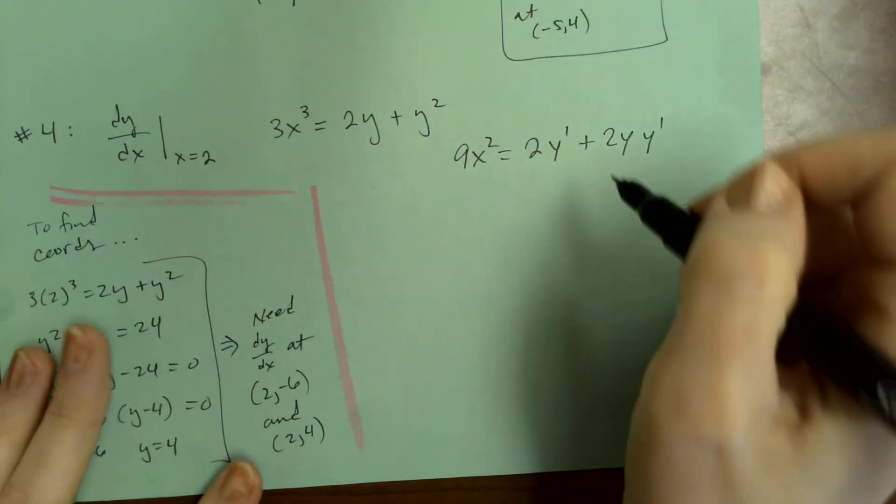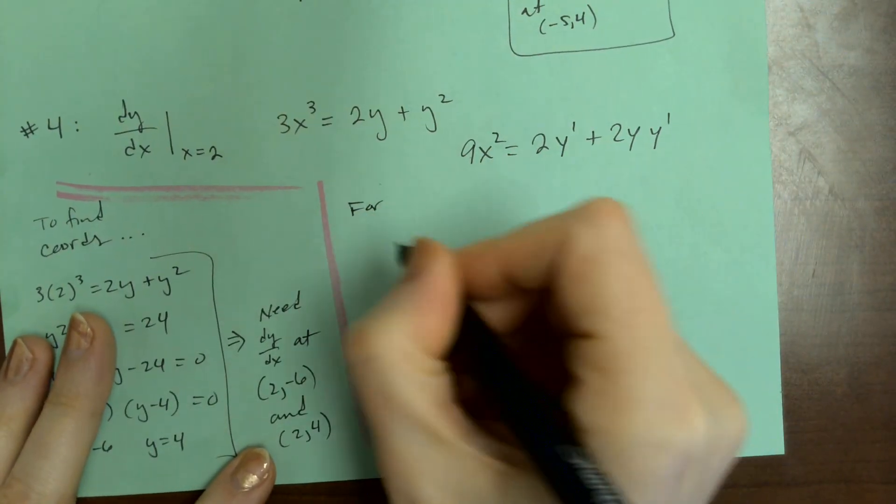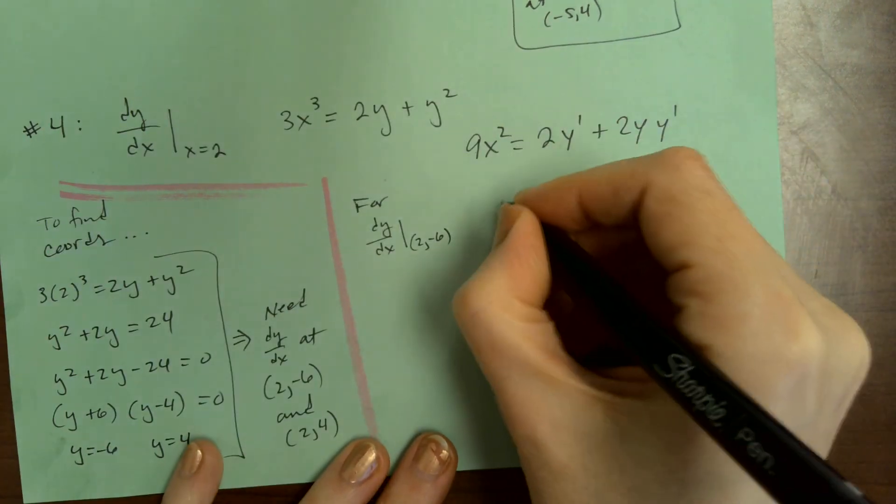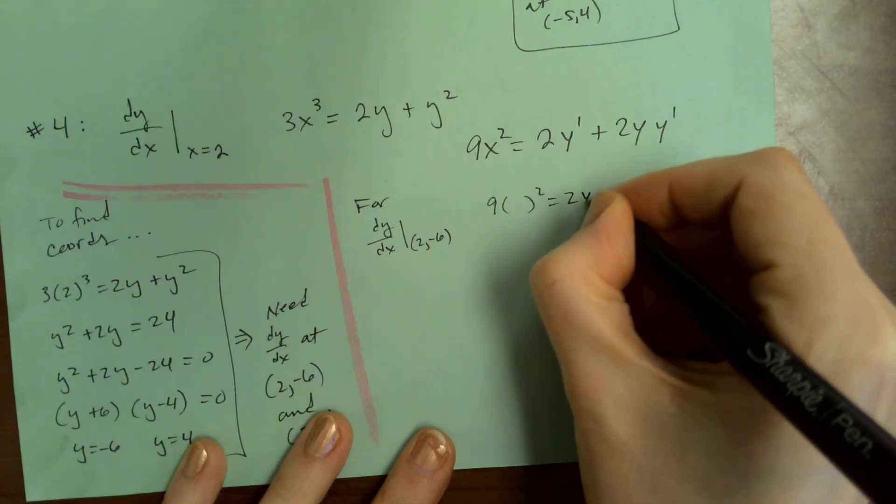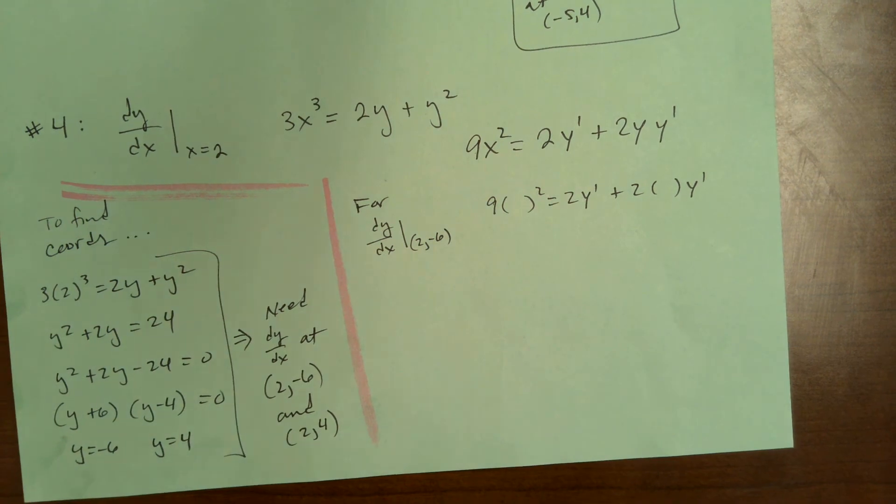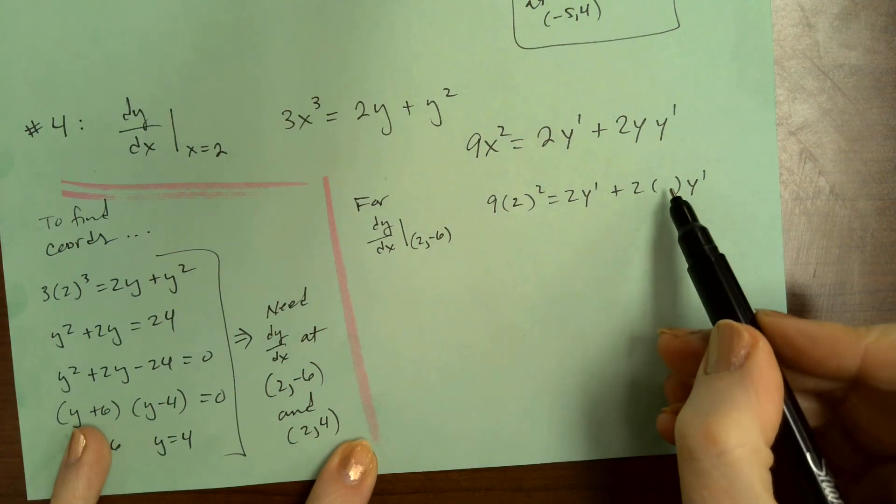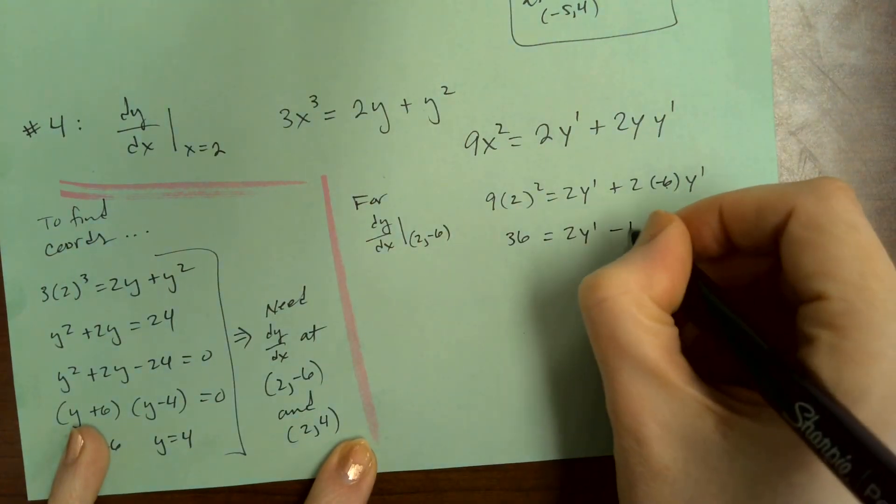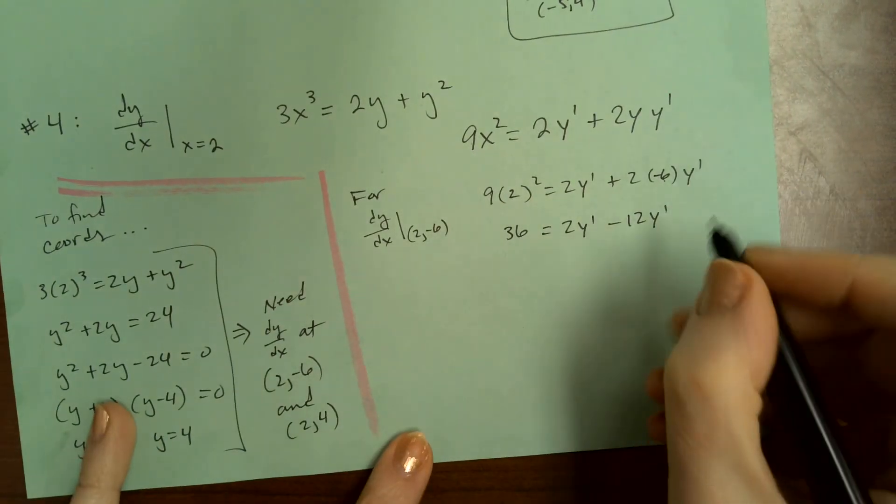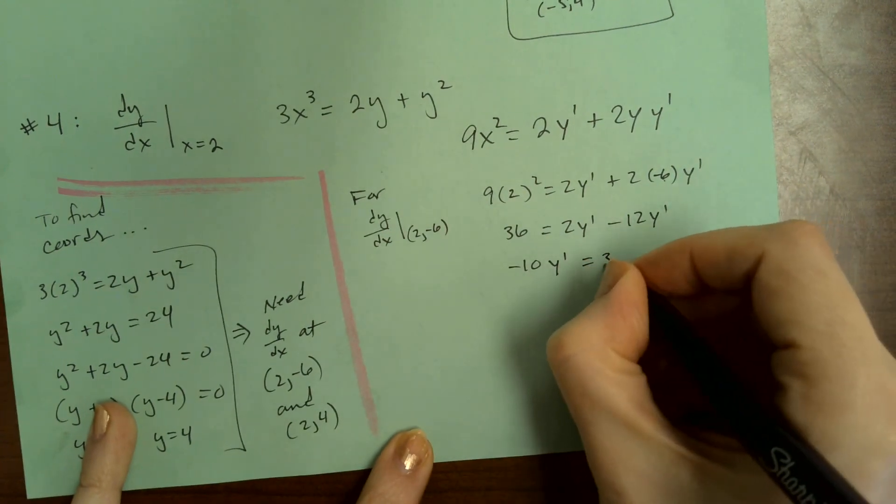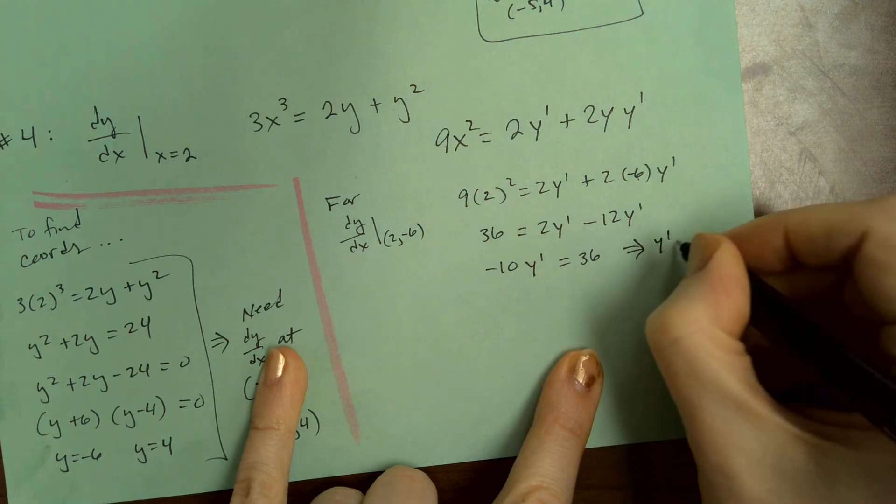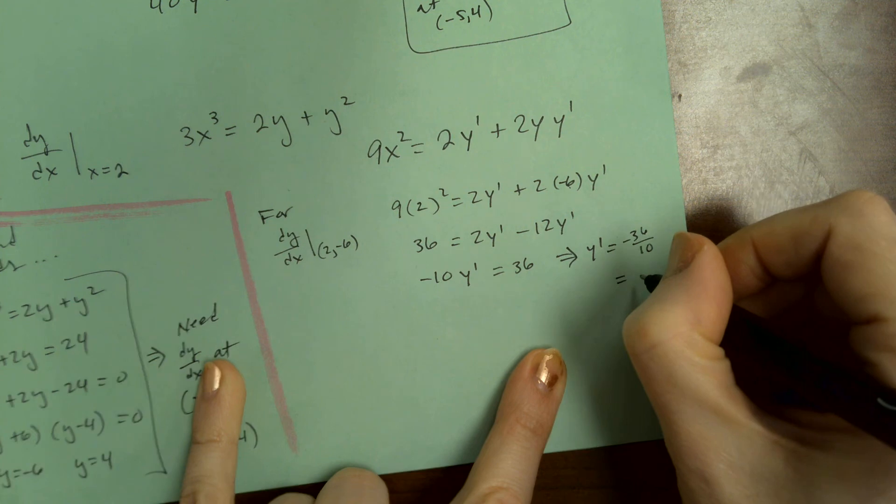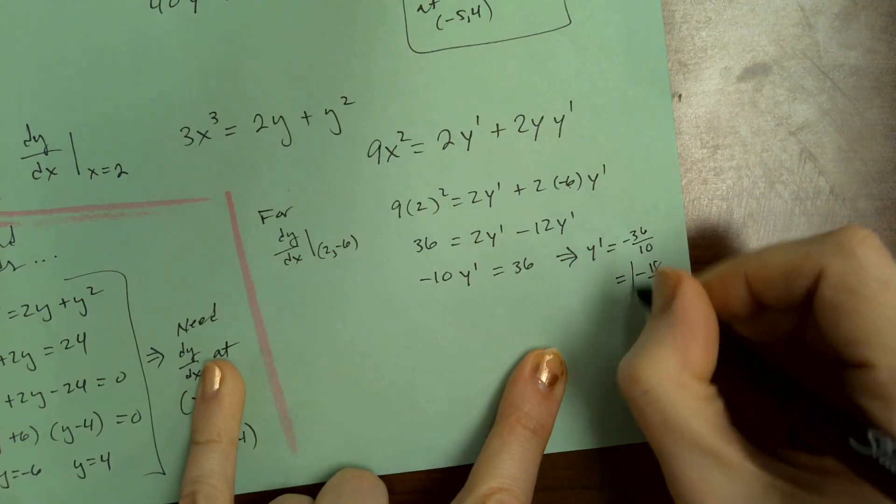And like I said, I would at this point plug in the coordinates. And I'm going to be really clear to my reader over here. So I'll say for dy/dx evaluated at 2, negative 6. I'm just leaving blanks here except for the y primes. So here's where x was, so a 2 is going in there. Here is where y was, so a negative 6 is going in there. So this is 36, 2y prime minus 12y prime. So this ends up being negative 10y prime equal to 36. So this ends up being, so we get y prime is negative 36 over 10. That's negative 18 over 5.